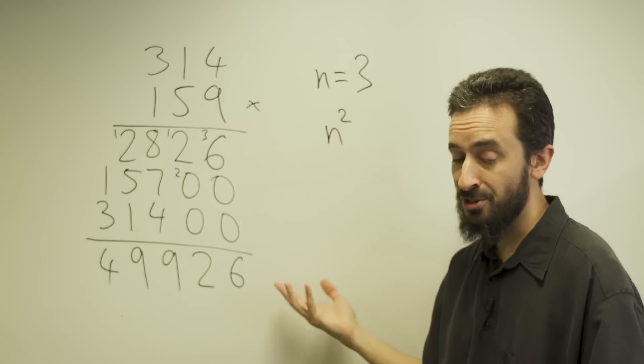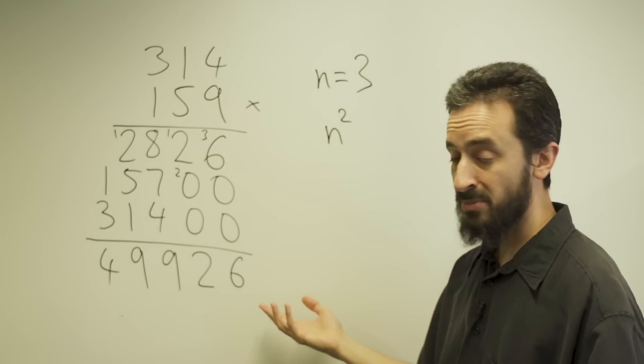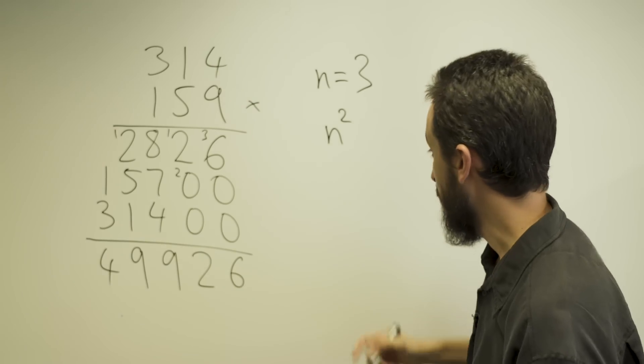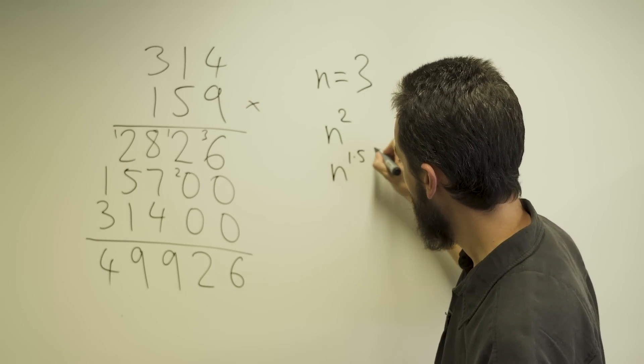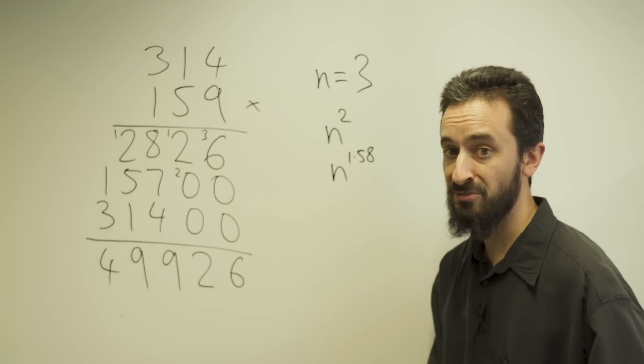Now this was essentially the best known multiplication algorithm up until about the 1960s. At that point Karatsuba discovered a better algorithm, which is something like n to the 1.58.